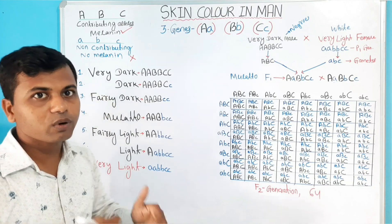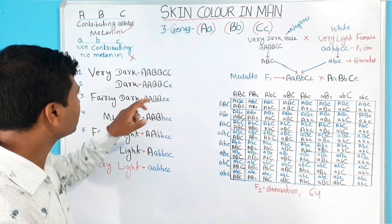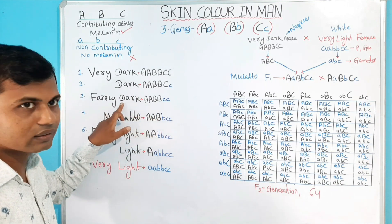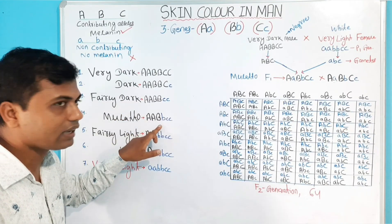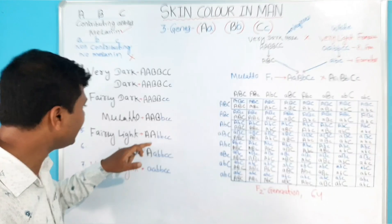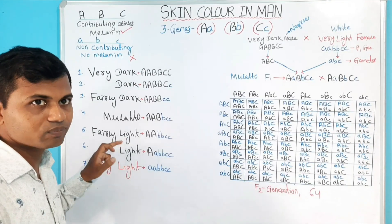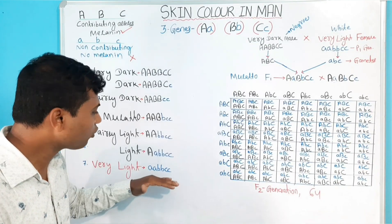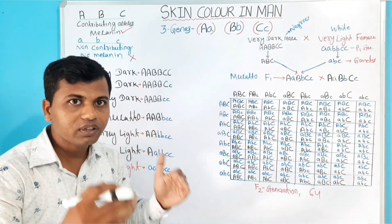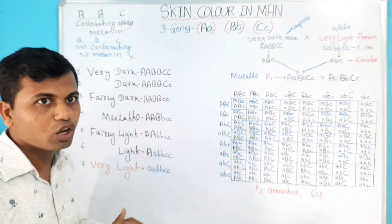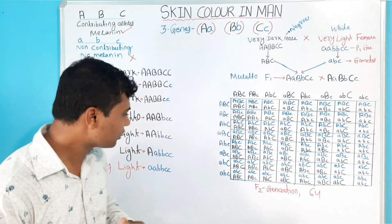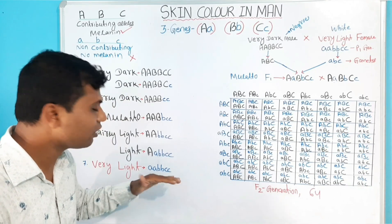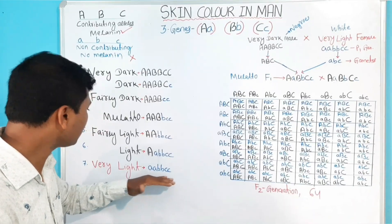When a person has any five contributing alleles, this person appears dark. When an individual has any four contributing alleles, they appear fairly dark. When an individual has any three contributing alleles, they appear mulatto. When an individual has any two contributing alleles, they appear fairly light. When an individual has any one contributing allele, they appear light. When an individual has no contributing alleles and all non-contributing alleles, they appear very light, because non-contributing alleles have no capacity for synthesis of melanin, so there would be no melanin under the skin.